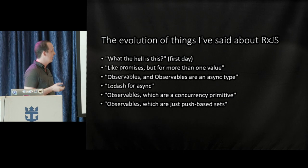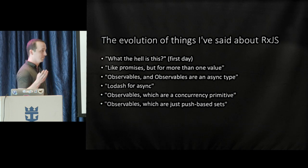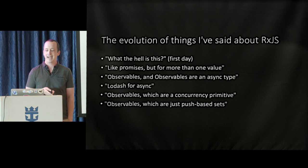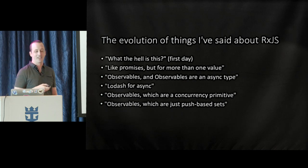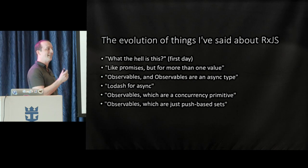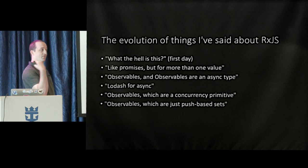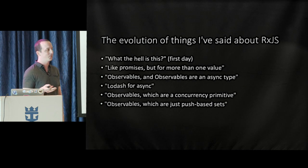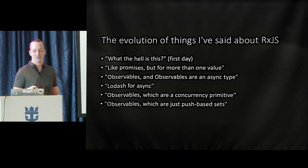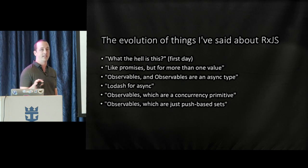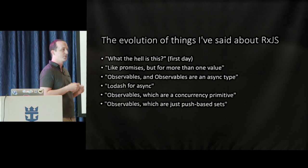So here's an evolution of things I've said about RxJS. The first time I saw it: "What the hell is this?" Looked like Lodash or something — why do I need another one of those? Then for a while I was telling people, "Well, it's like promises, but for more than one value." Yeah, it's not quite accurate. Observables are an async type — it's RxJS about observables. Still not entirely accurate. "Lodash for async" — we still got that word async in there. It's not really always asynchronous. So how about "observables are a concurrency primitive"? We've got a single-threaded environment with JavaScript — maybe it's not really about concurrency. I've finally kind of settled on: observables are push-based sets. So RxJS is about manipulating observables, which are push-based sets.